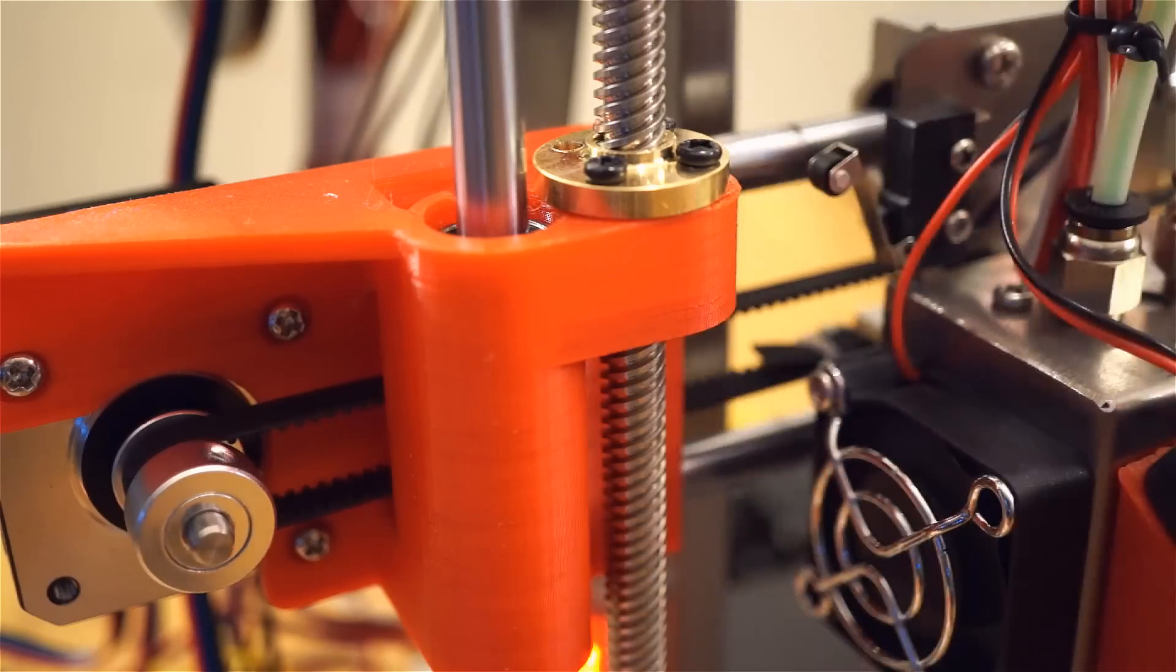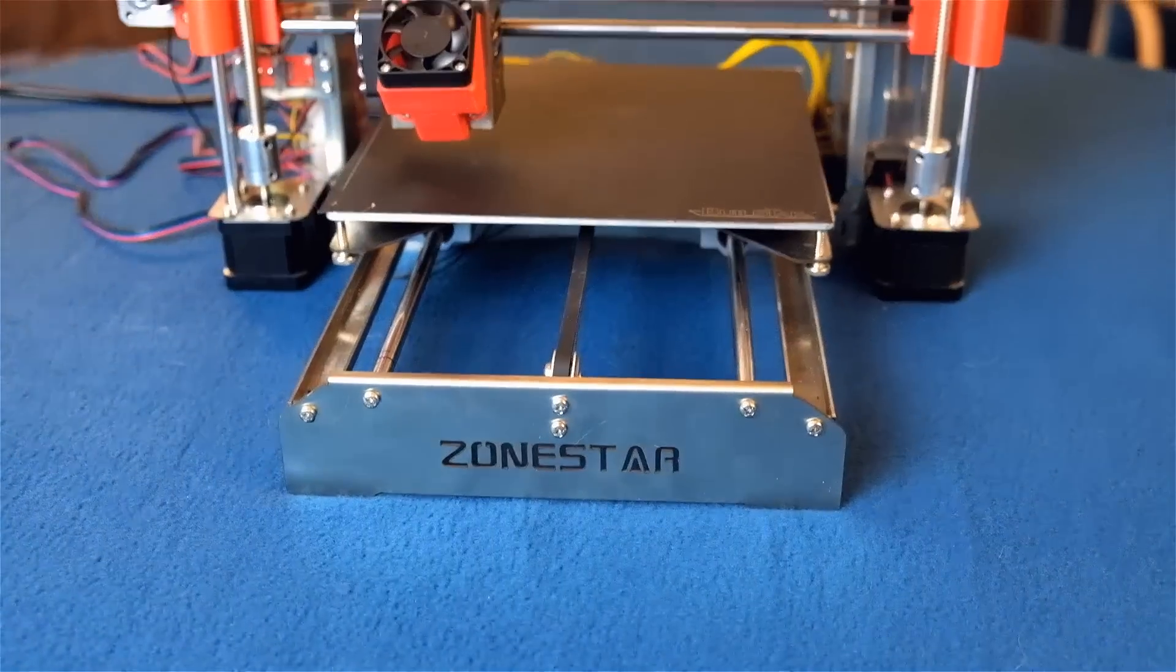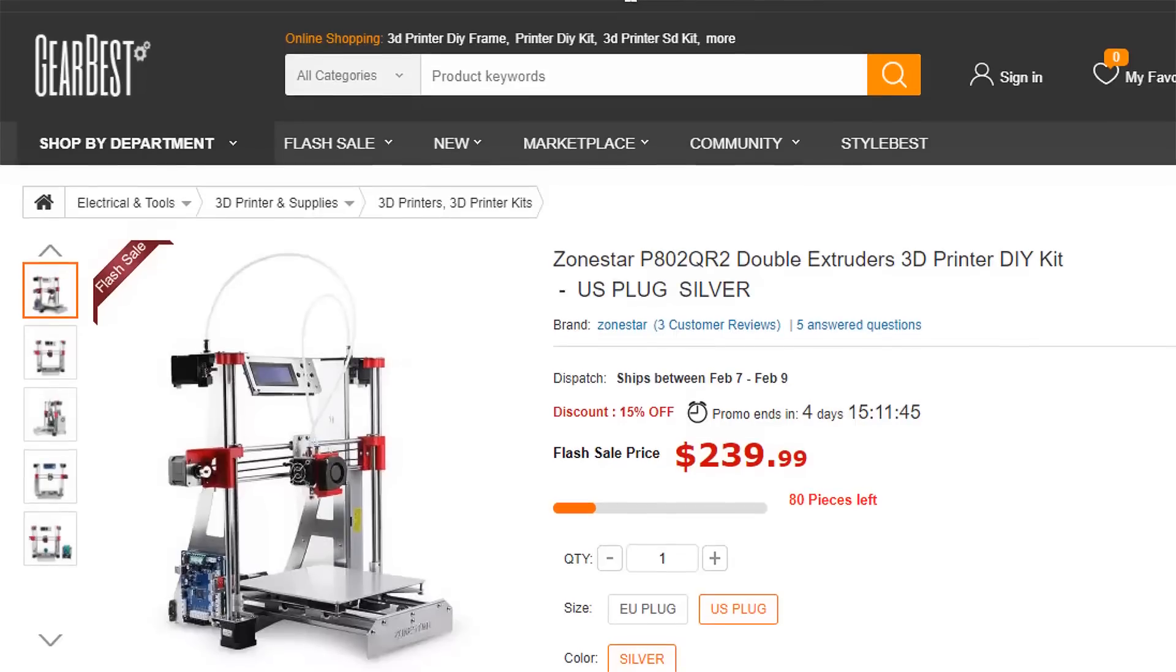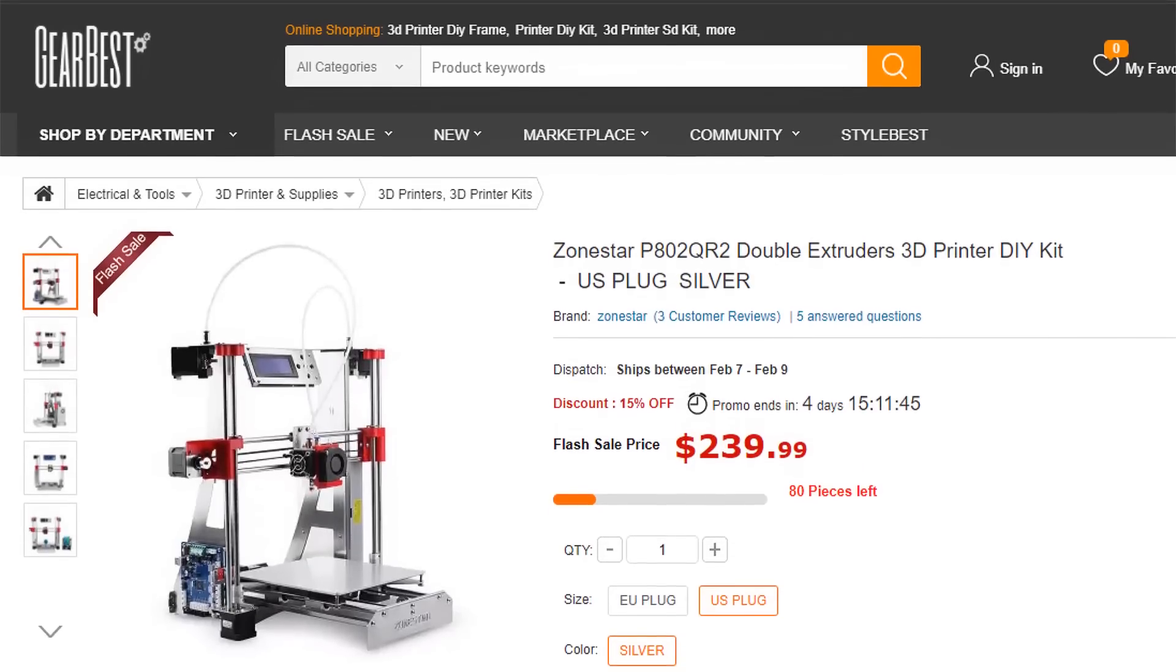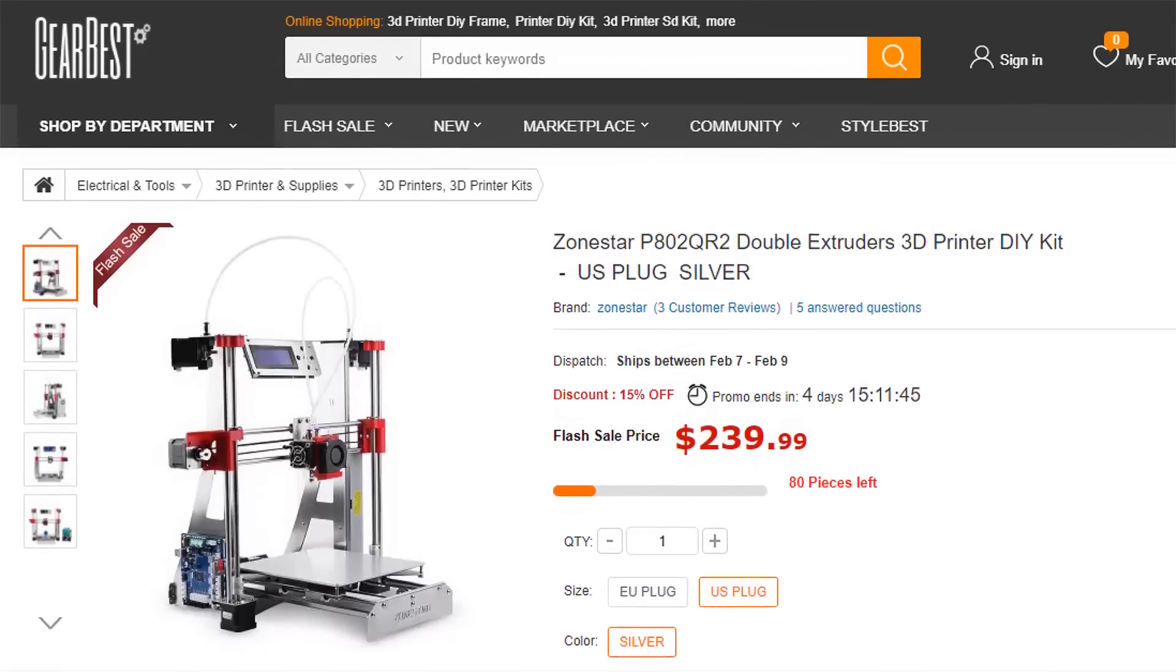The 3D printer I wanted to review is called the ZoneStar Dual Extruder. As of filming this video, the price is only $239, which is a good deal for any printer that can print two colors.